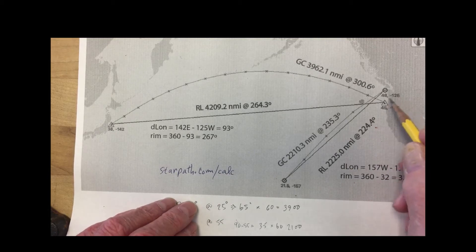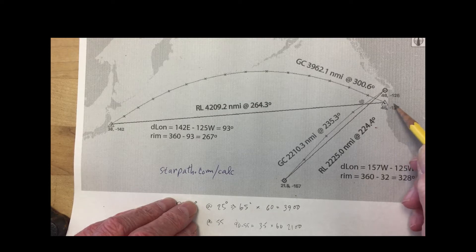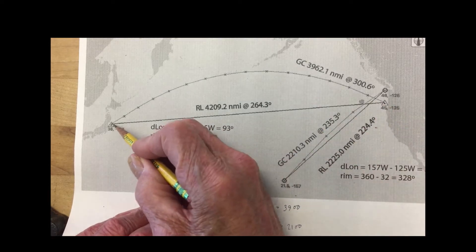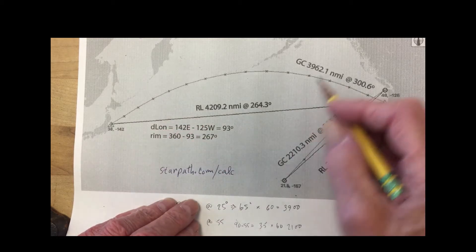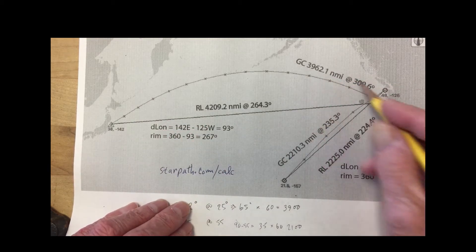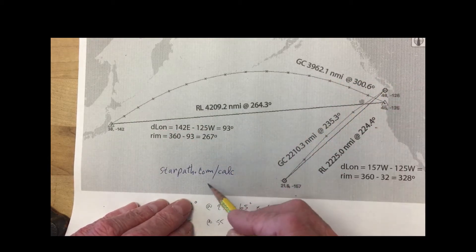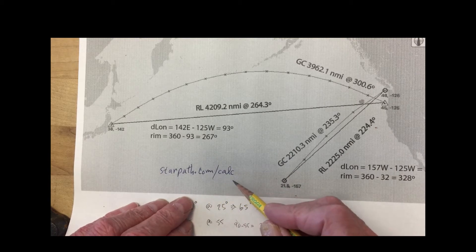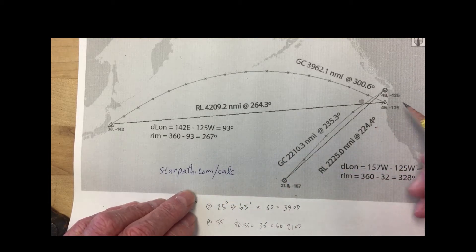The two examples we're going to do here is from this point on the Oregon coast, 45 degrees 125 west, going to Japan 38, 142, and then here are the actual solutions that you can get from starpad.com/calc. There's calculators there for doing that.